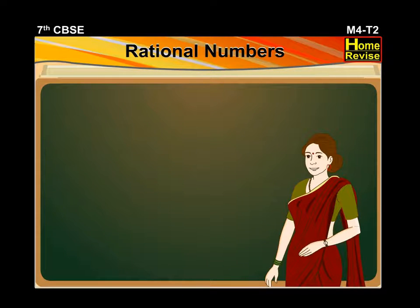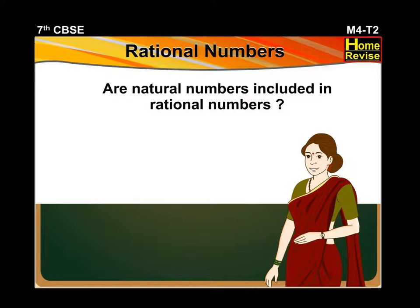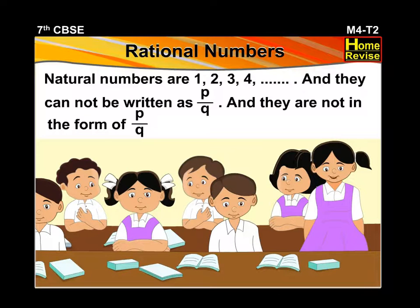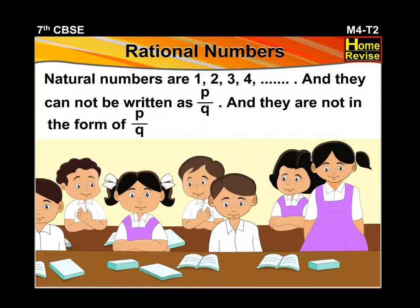Now I will ask you one question — see whether you can answer it. Tell me, are natural numbers included in rational numbers? A student responds: No, ma'am. Natural numbers are 1, 2, 3, 4, and so on, and they cannot be written as P upon Q — they are not in the form of P upon Q.